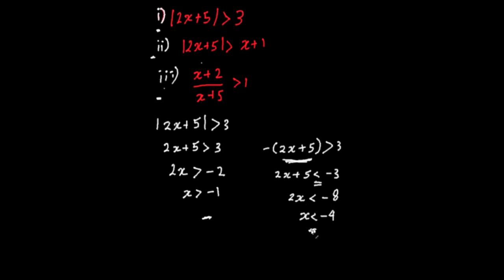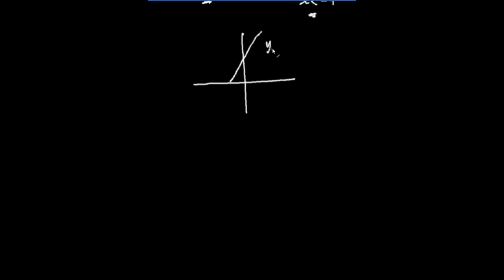I can also do this graphically if you want to visualize it. On the xy-plane, I'm going to draw the absolute value version: y equals the absolute value of 2x plus 5. The y-intercept is 5 and rise over run is 2, so the x-intercept is minus 2.5. For y equals 2x plus 5 it's a straight line, but once the absolute value comes into play, the negative portion reflects above the x-axis — that's all the absolute value operator does.